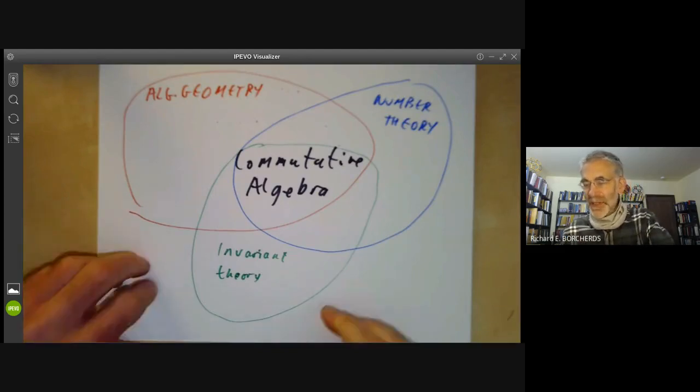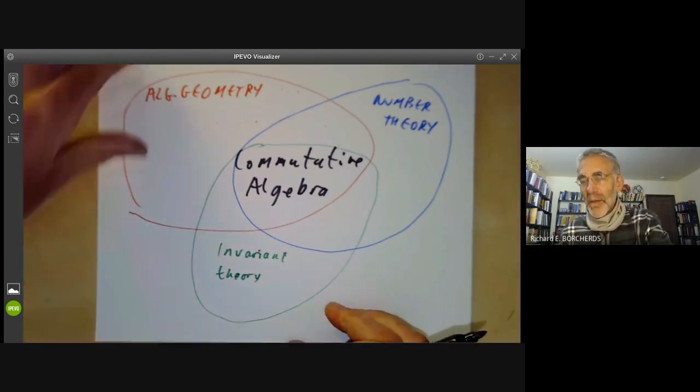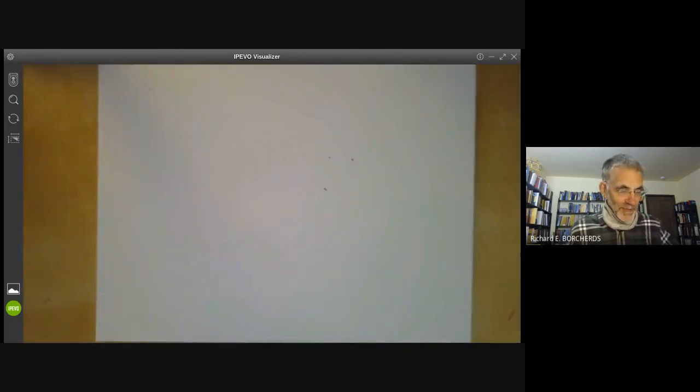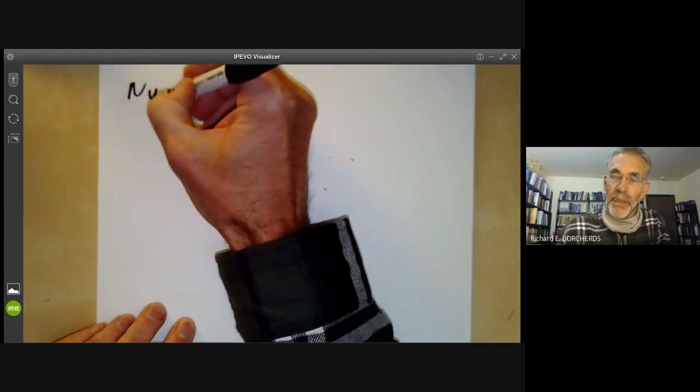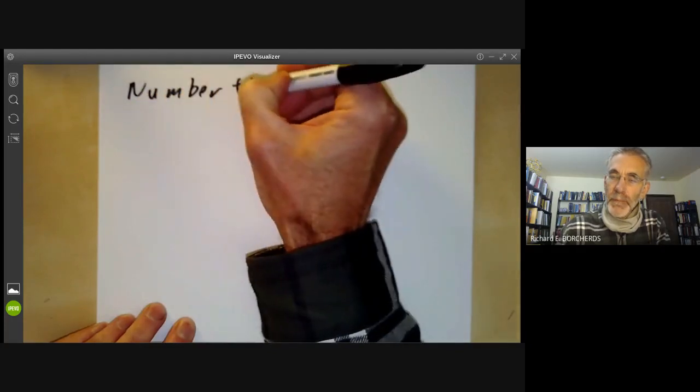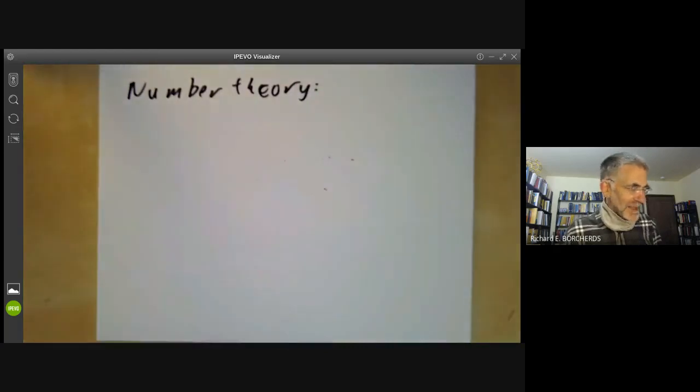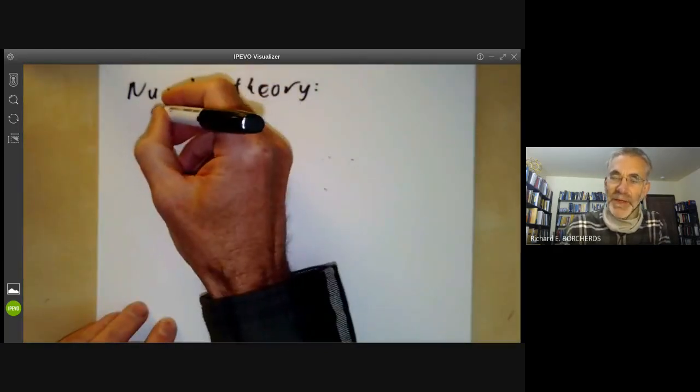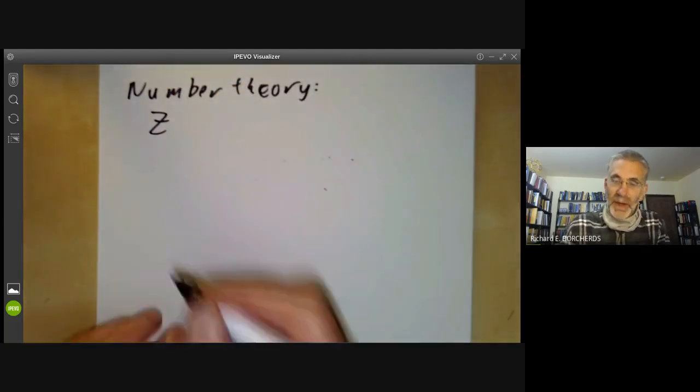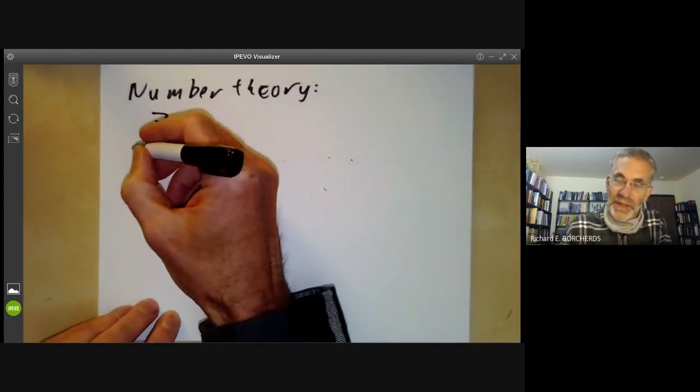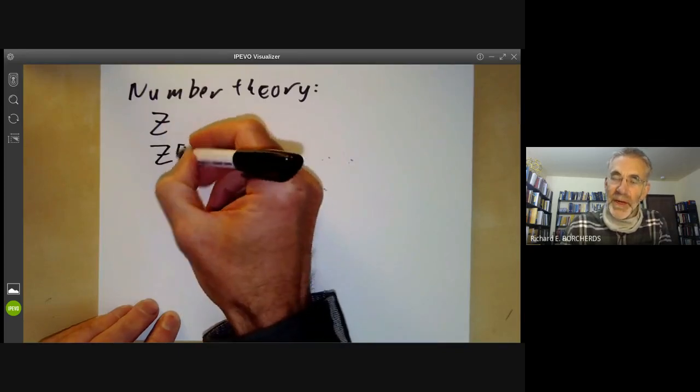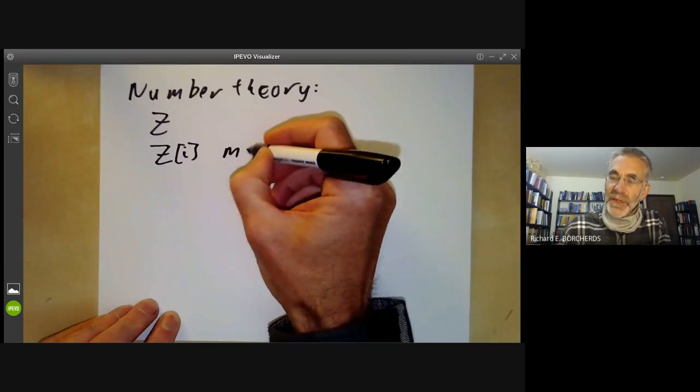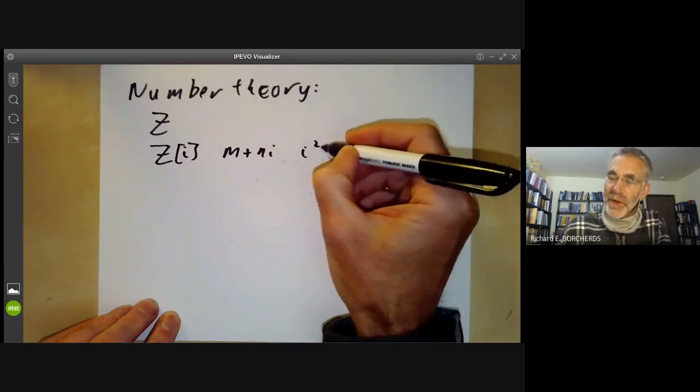Let's start by giving some basic examples of commutative rings that we study. In number theory, we have the following fairly typical examples. First, we have the integers Z. Then we have rings of integers in algebraic number fields. For instance, you might take the ring Z[i] of all numbers n+mi with i²=-1, the Gaussian integers.